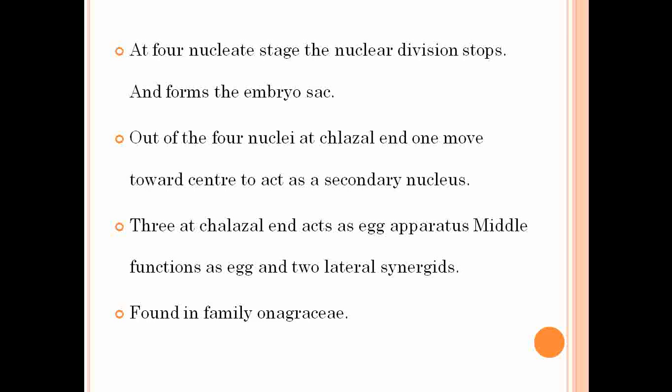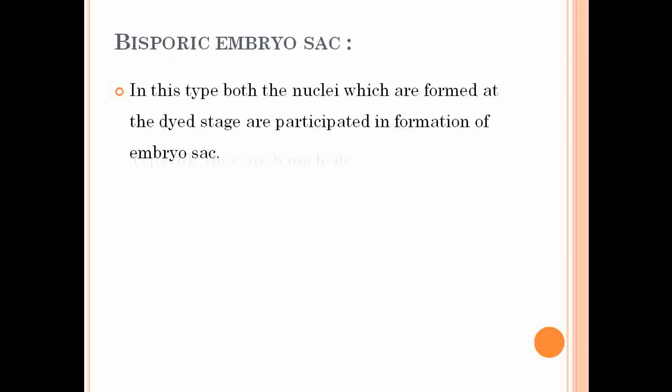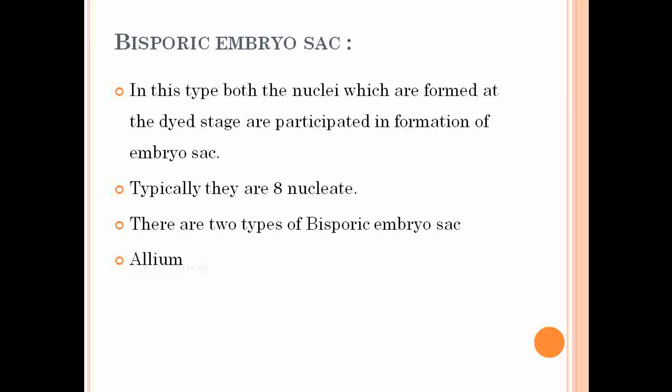Next, we see the second type of embryo sac: the bisporic embryo sac. In this type, the active megaspore undergoes first transverse division to form the dyad. However, in the bisporic embryo sac, the actual cell plate is not formed between the dyad. That's why two nuclei are present inside a single cell, and this binucleate stage undergoes further nuclear division to form the embryo sac. That's why it is called the bisporic embryo sac.